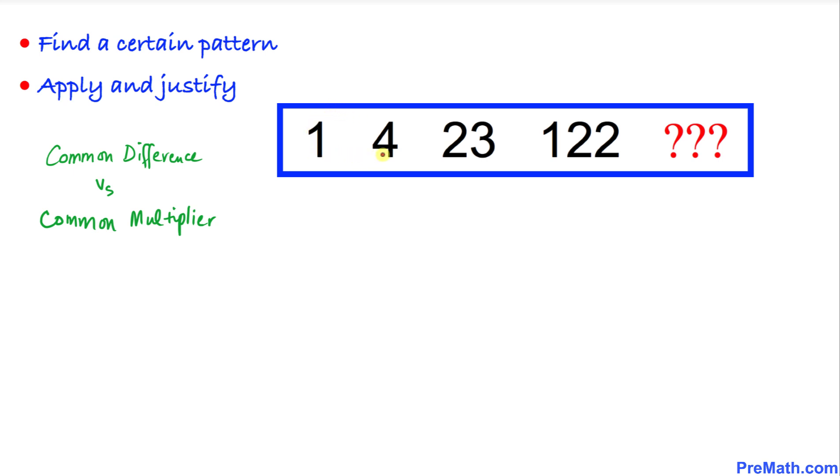Now we are going to focus on this problem with two different approaches. One is finding the common difference—what should we add or subtract to get the next number? We can see the numbers are getting bigger much faster, so the common difference is not going to work. The common multiplier is going to be the only way to handle this problem.